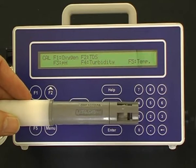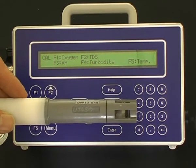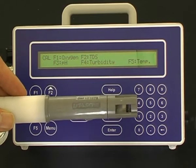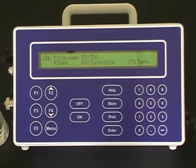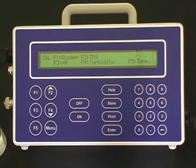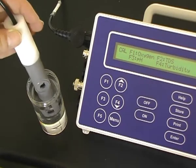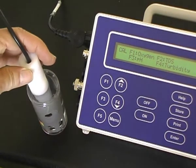The first point for the dissolved oxygen calibration is a zero calibration using the sodium sulfite solution we just prepared. Place the dissolved oxygen sensor in the sodium sulfite solution and allow it to equilibrate.